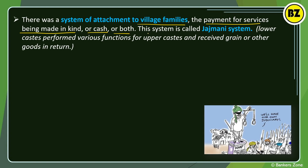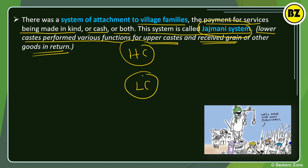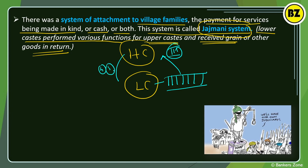There was a system of attachment to village families where payment for services was made in kind, cash, or both — this is called the jajmani system. In simple words, lower caste people performed various functions for the upper caste and in return received grains or other goods. This was previously very dominant in rural areas but has been reduced.